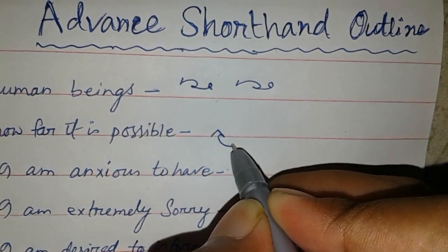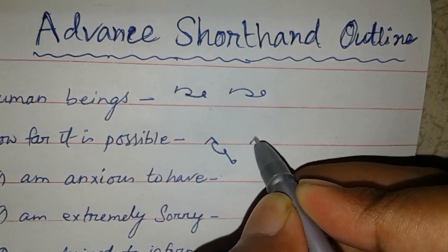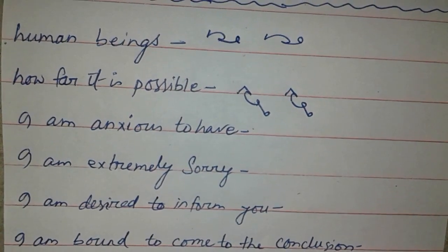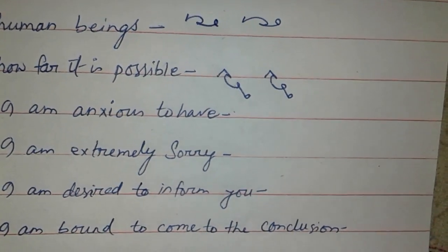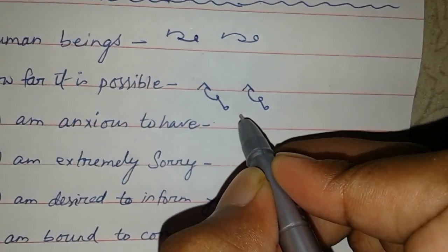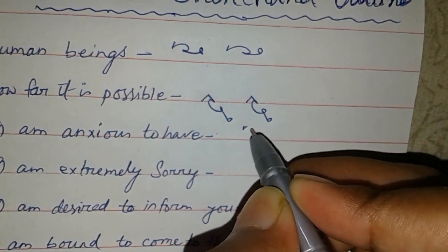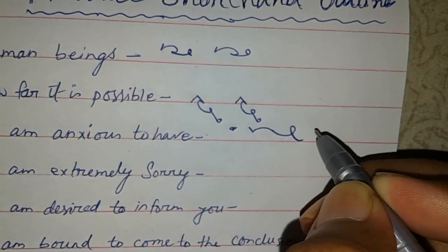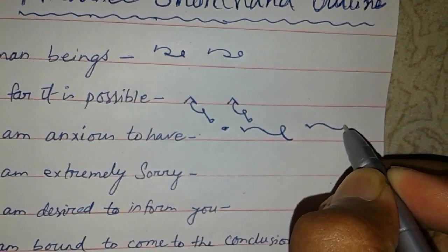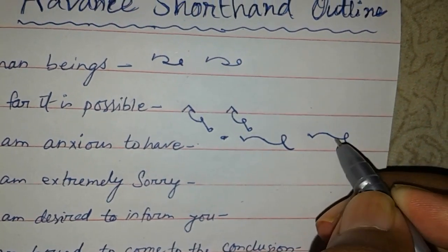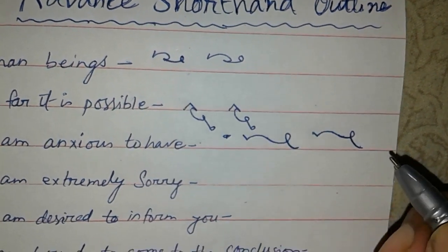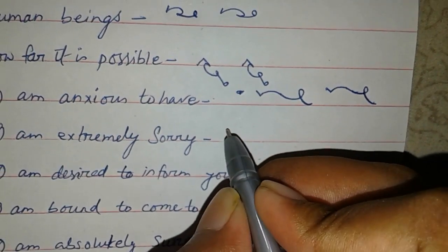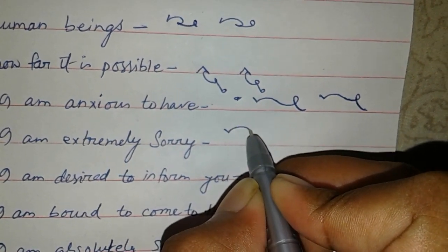And then I am anxious to have. I am N G S B, this is engine and this is B. Then I am extremely sorry, I am.